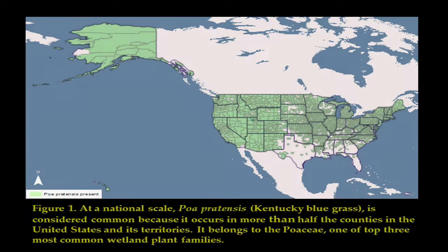What we found was that commonness varies according to spatial scale. A species like Kentucky bluegrass, for example, is common nationally. To tell you what that means — it occurs in more than half of the counties nationwide, including Alaska, Hawaii, and the Caribbean regions. The way the database is structured can explain how we came up with how many counties a plant species occurs in.